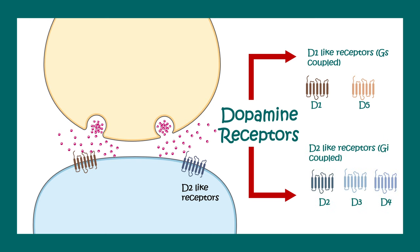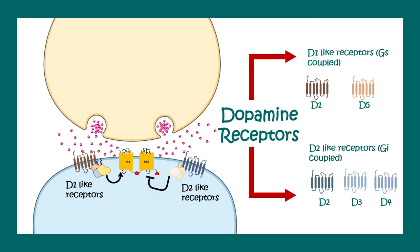And D2-like receptors, which involve D2, D3, and D4. All D1-type receptors are Gs-coupled, meaning they activate adenylate cyclase and generate cyclic AMP. The D2 receptors are Gi-coupled receptors, meaning they inhibit adenylate cyclase.